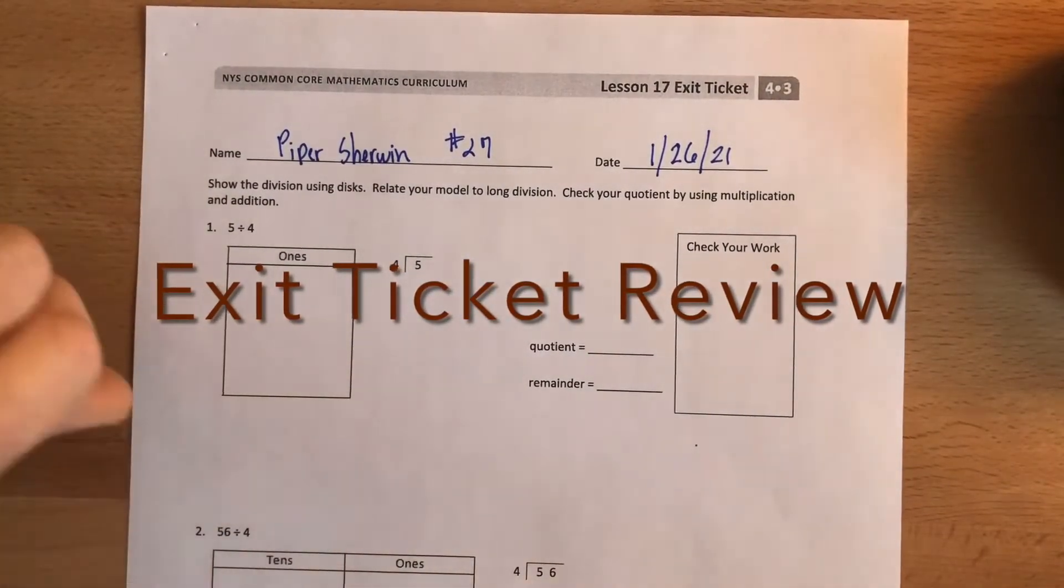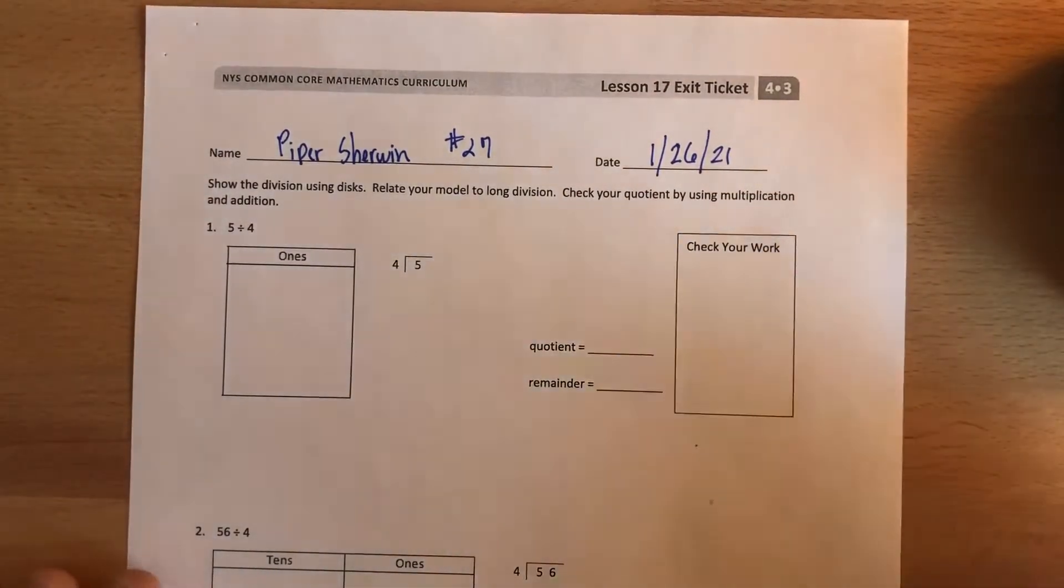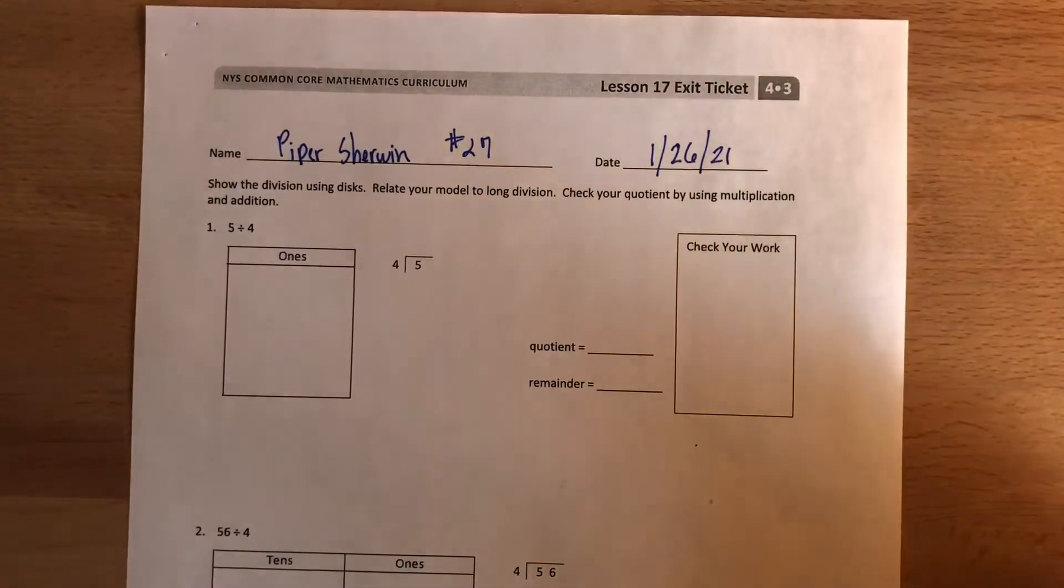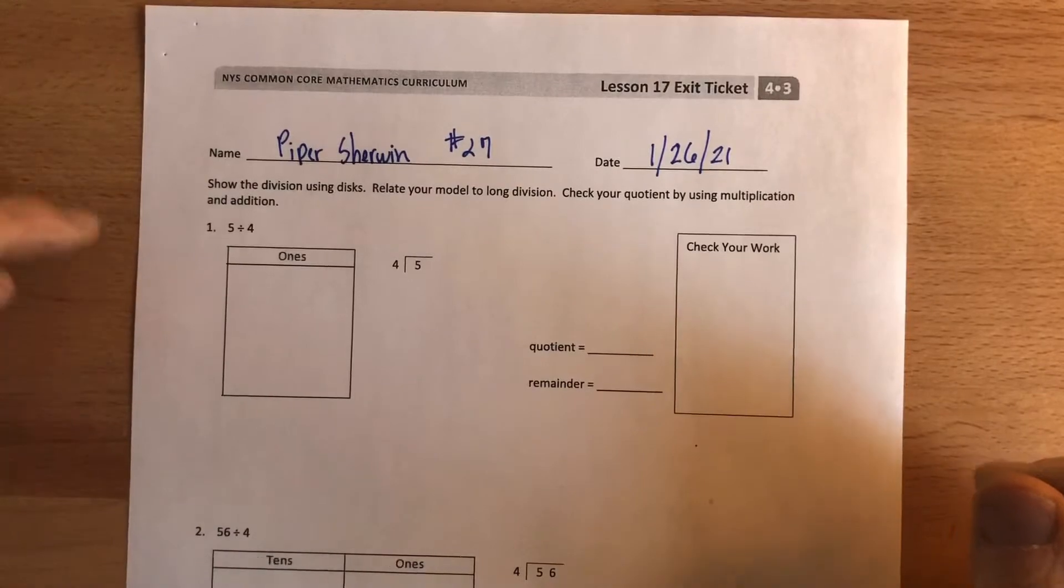Hello boys and girls, we're back here at math class and we're gonna start off with the exit ticket from yesterday. Hopefully you had a lot of success yesterday so we can have success today doing this. You got five minutes, you're on the clock. Do these as best as you can and see how you do.